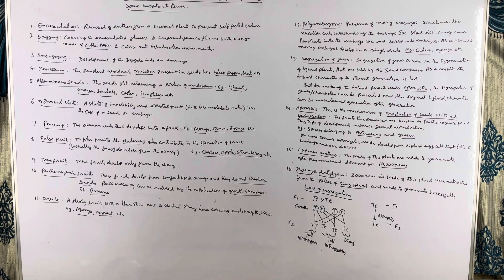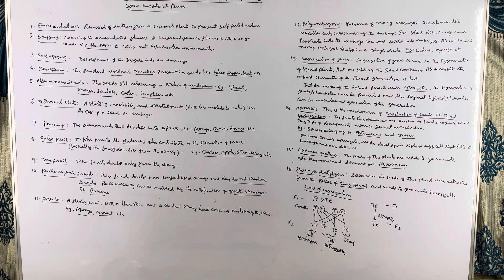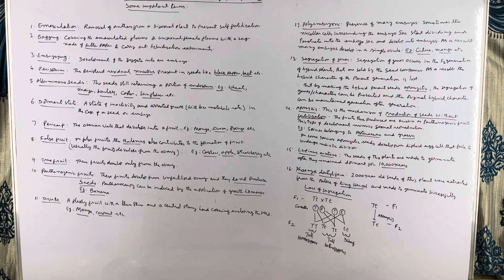Albuminous seeds: generally, the albumen is consumed during early embryo development, but sometimes the albumen is not completely consumed and still remains in the seed. Such seeds are known as albuminous seeds. Examples include wheat, maize, barley, castor, sunflower, etc.